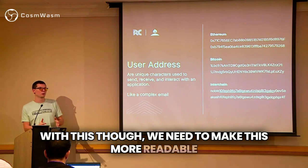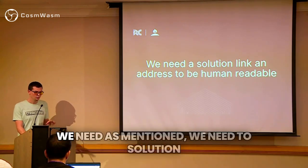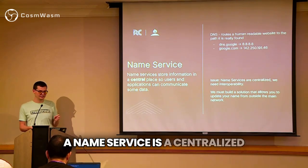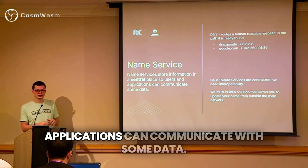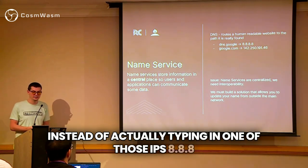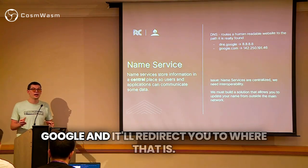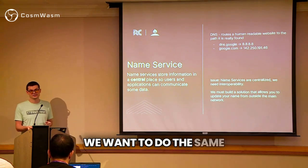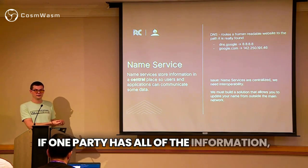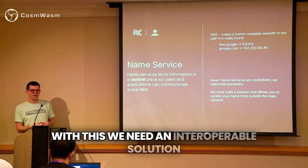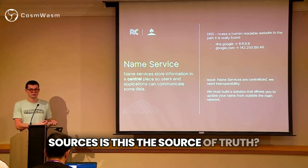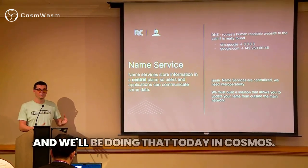With this, we need to make addresses more readable and we want this done in IBC. We need a solution to link this address to be human readable. This is where a name service comes into play. A name service is a centralized store of information that users and applications can communicate with. A good example is DNS — instead of typing in an IP like 8.8.8.8 into your browser, you could type in DNS.Google and it redirects you. We want to do the same thing with a normal user address. The issue is that name services are very centralized — if one party has all of the information, who's to say they won't change something? We need an interoperable solution where we can save it across multiple different parties at the same time, so you can verify from multiple sources that this is the source of truth, and only the user that owns that address can actually submit that. We'll be doing that today in CosmWASM.